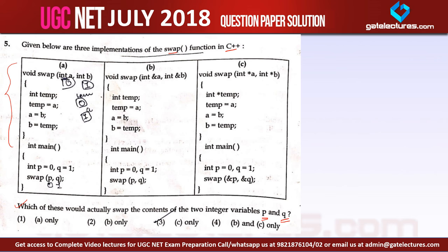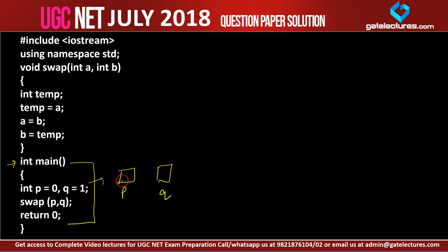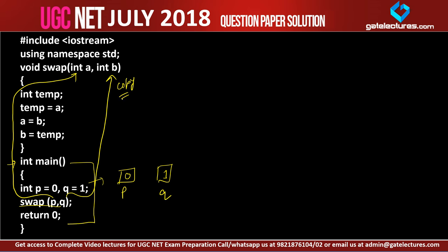Let us take the first function. I copied this first function into a program so I can explain it thoroughly. Execution starts from the main function, which has two variables: P storing 0 and Q storing 1. We call swap with P and Q. From this swap function we are copying the value of P into A and the value of Q into B. This is called copying — call by value.